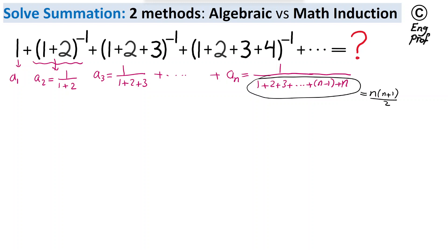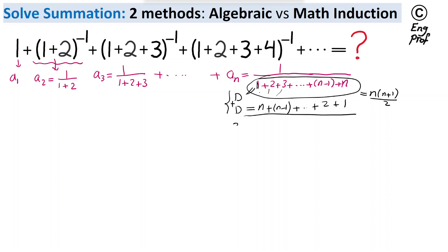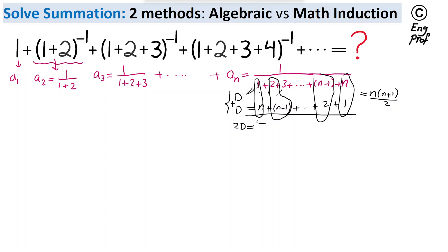A quick demonstration: refer to this sum as d, then write d in reverse order — starting from n, then n minus 1, continuing down to 3, 2, 1. When you add these two expressions for d, the left side gives 2d. On the right side, each pair of terms sums to n plus 1, and there are n such pairs, giving n times n plus 1. Therefore d equals n times n plus 1 divided by 2.